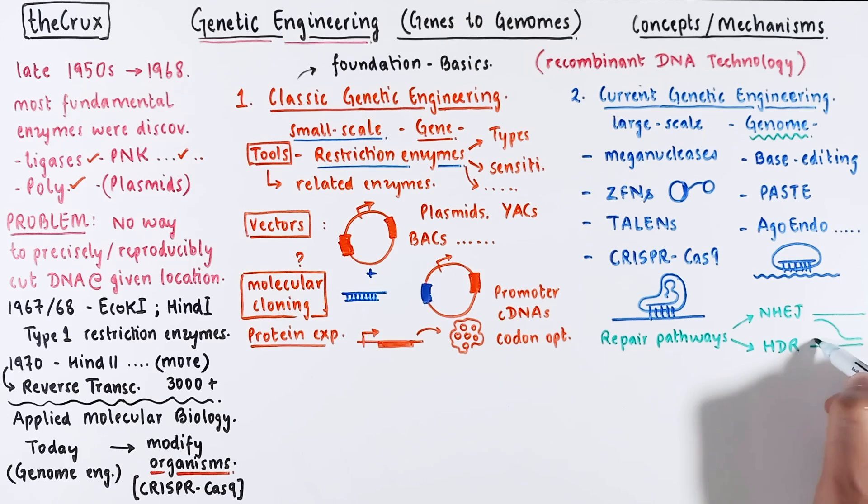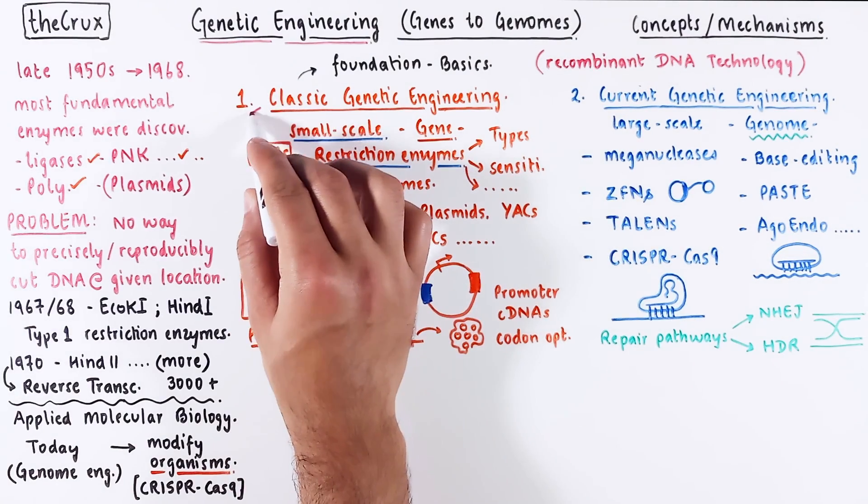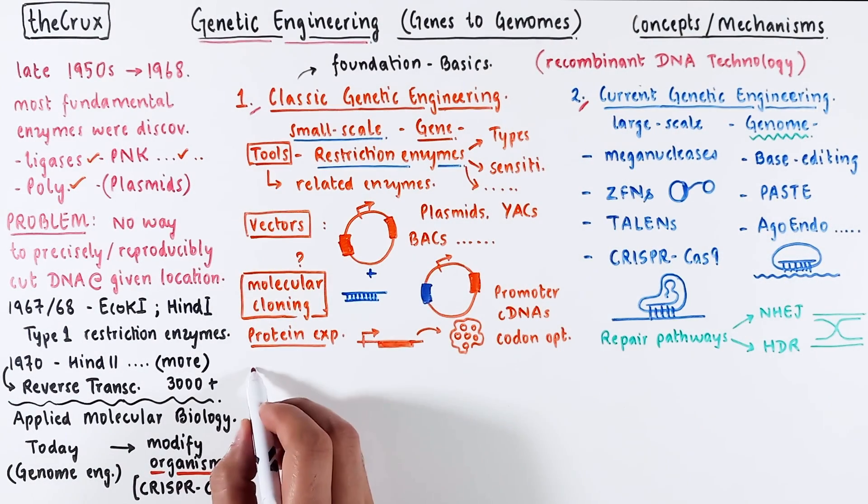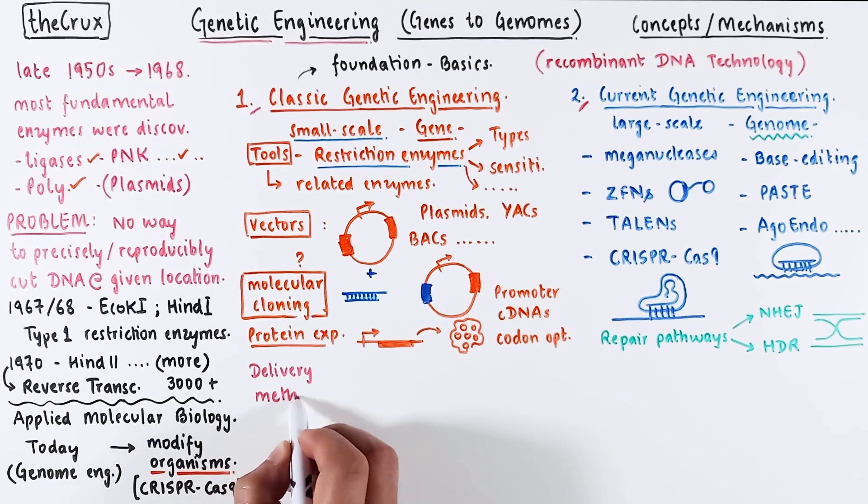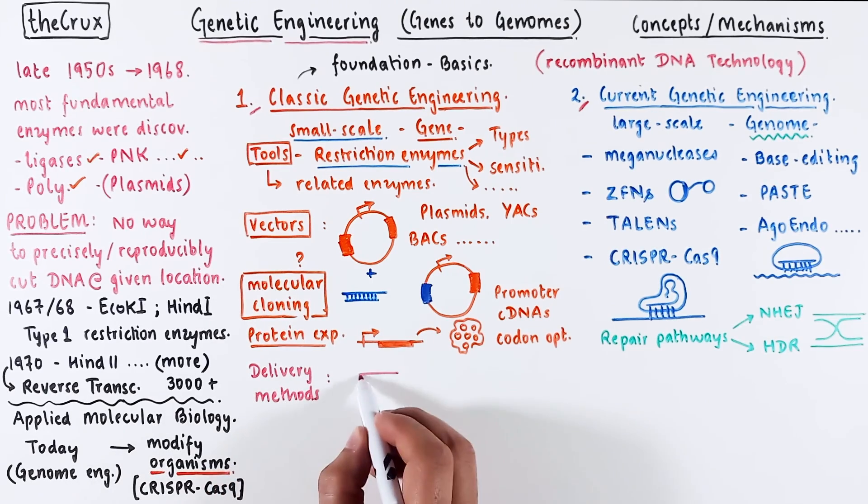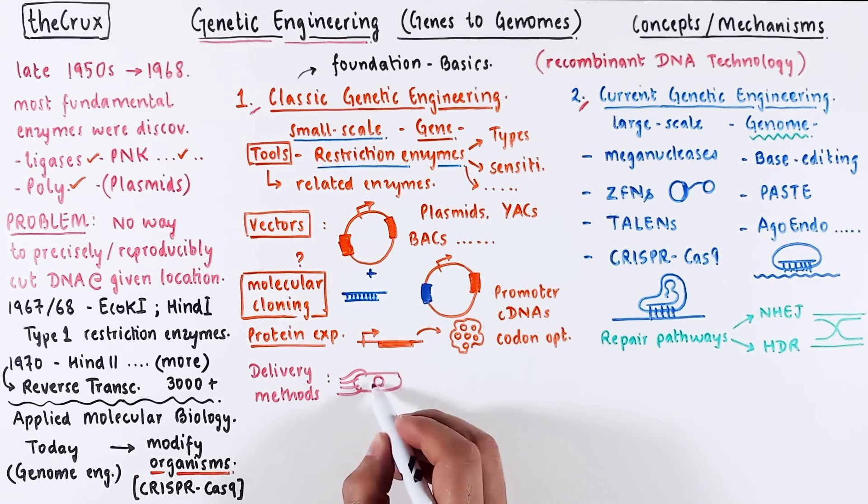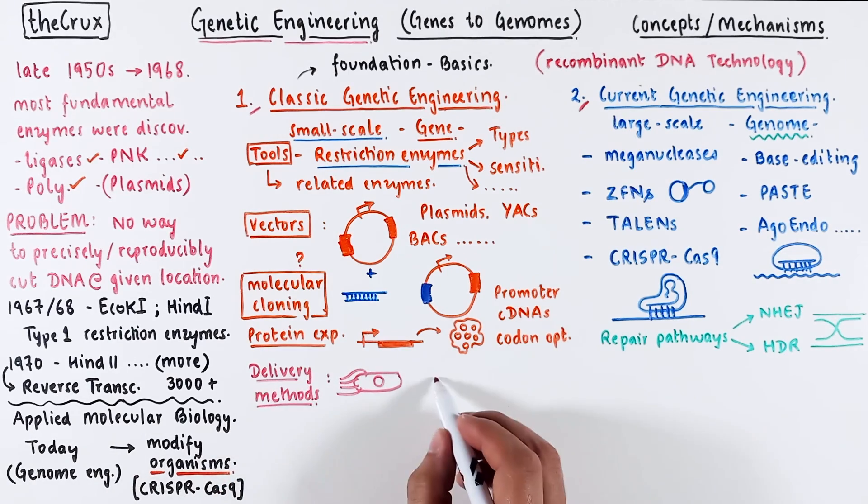Both styles of genetic engineering discussed here involve introducing DNA into a cell. The methods for achieving this vary depending on the type of organism you're working with. For bacteria, specific techniques are used. When working with mammalian cell culture in a dish, different methods come into play. In the realm of plant genetics, the gene gun has been a prominent tool for some time and it continues to be used.